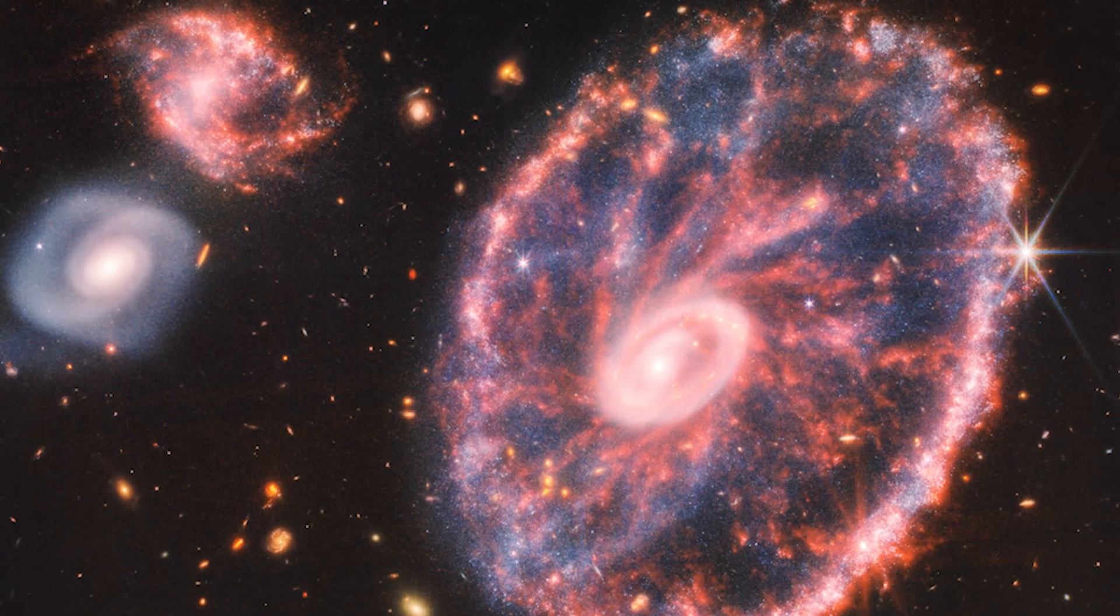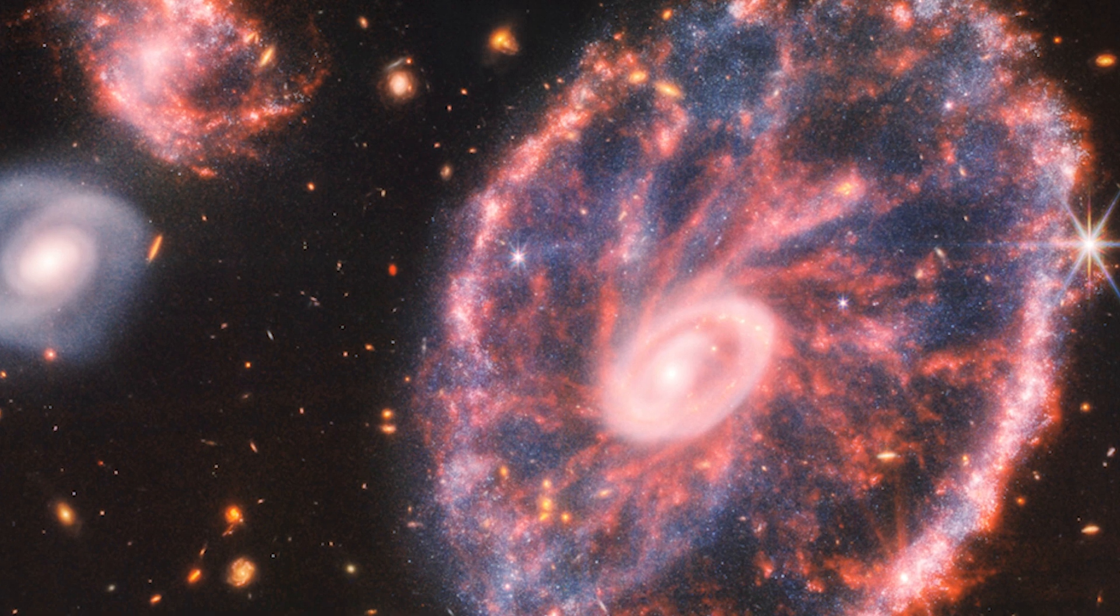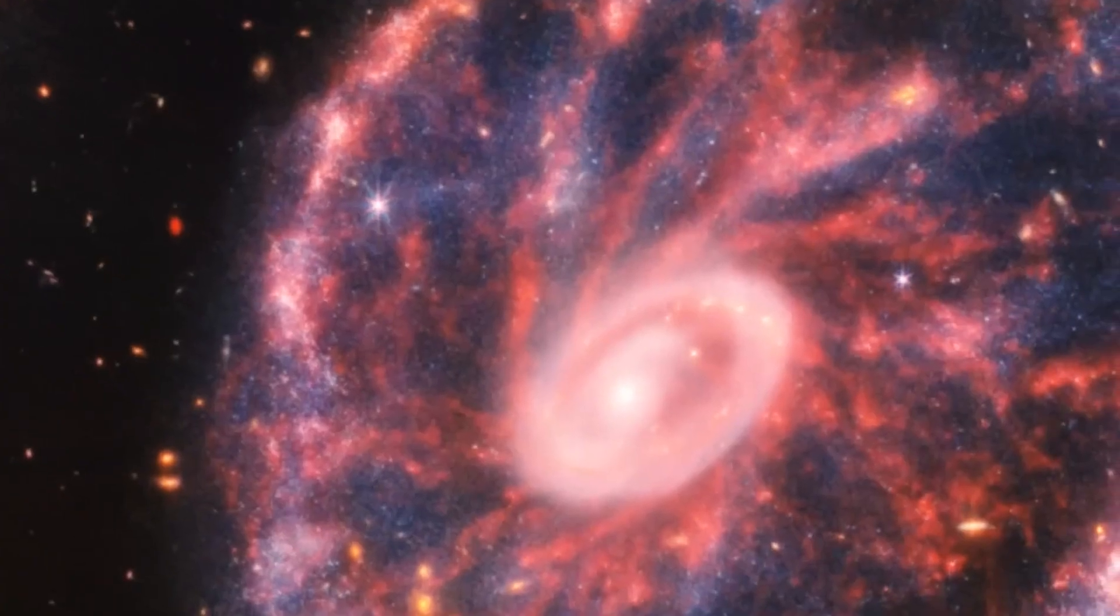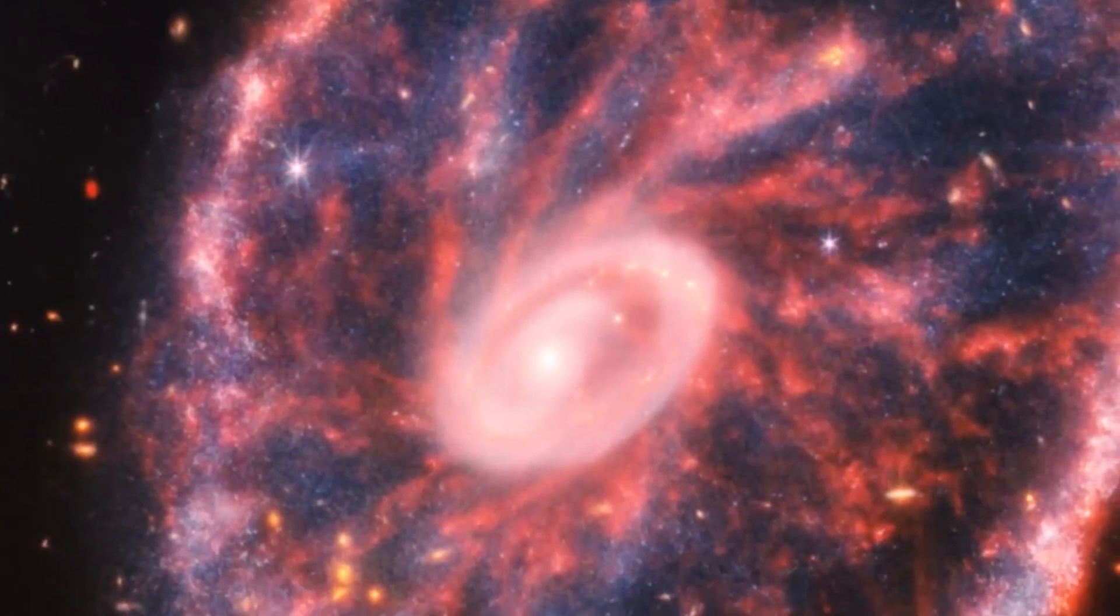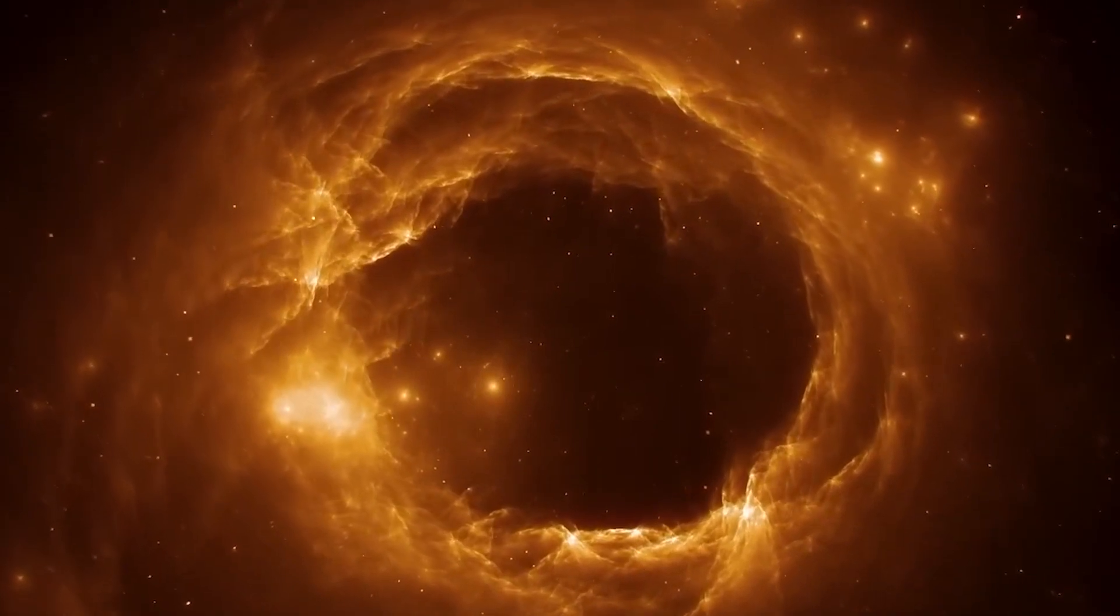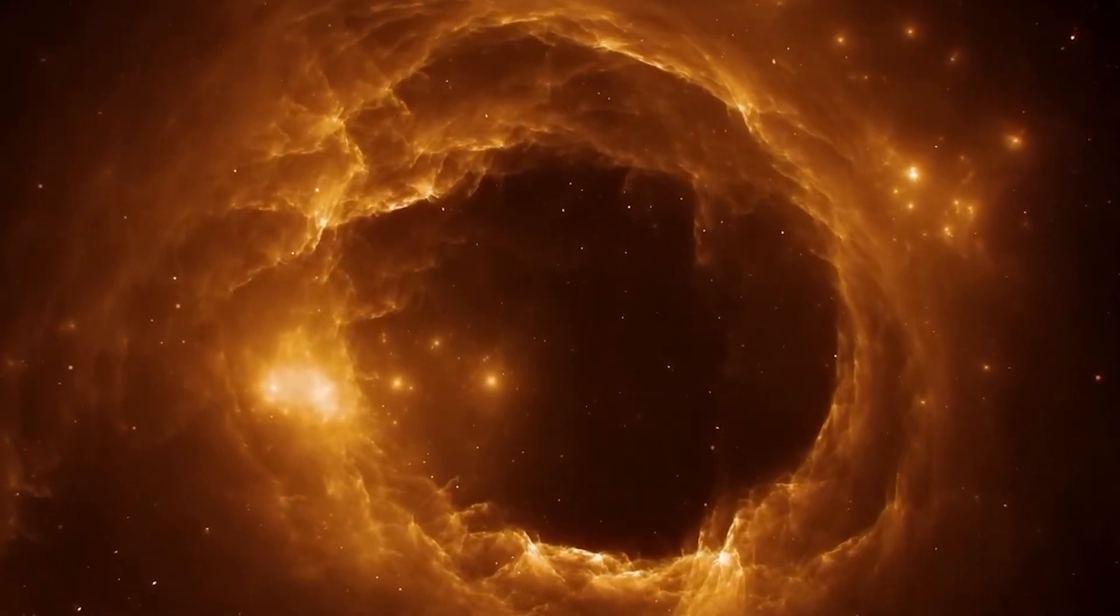Additionally, the James Webb Space Telescope has recently captured stunning images of the Cartwheel Galaxy that reveal never-before-seen details of this peculiar star system. The Cartwheel Galaxy, located 500 million light-years away from Earth, is a chaotic galaxy shrouded in hot dust that conceals a violent past.